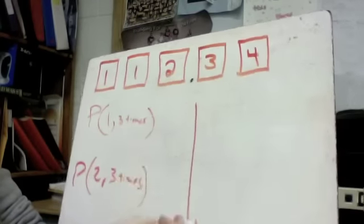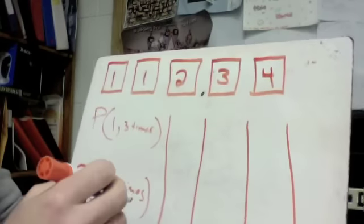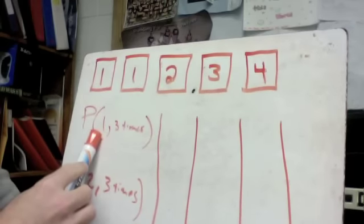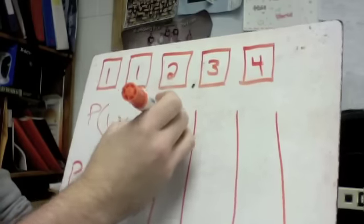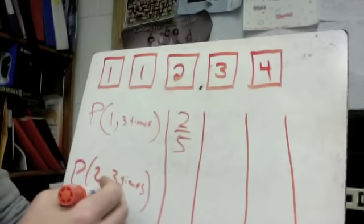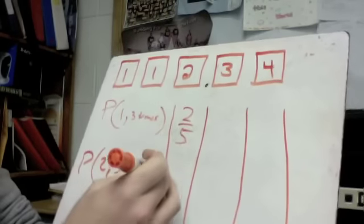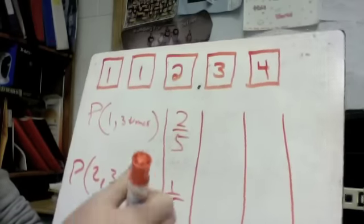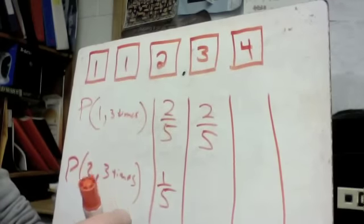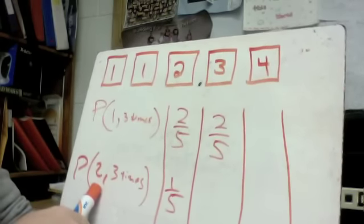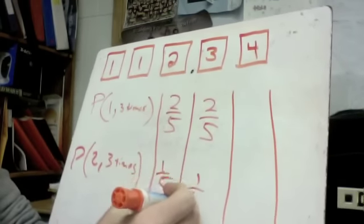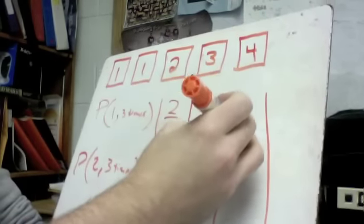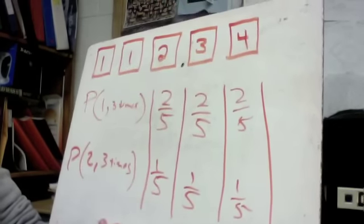We have three trials for each. Since there are always five cards, the probability of drawing a one on any draw is two out of five — because there are two ones. The probability of drawing a two is one out of five. Since we replace the card each time, these probabilities stay the same for all three draws.